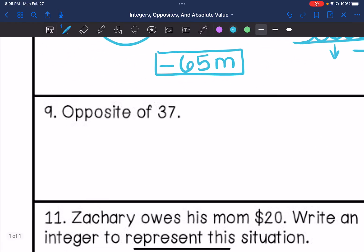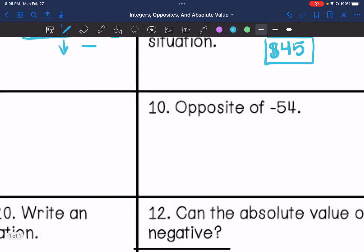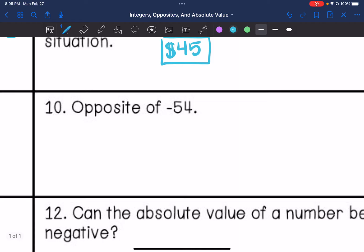Number 9. What is the opposite of 37? That is going to be negative 37. Number 10, opposite of negative 54 is going to be 54.